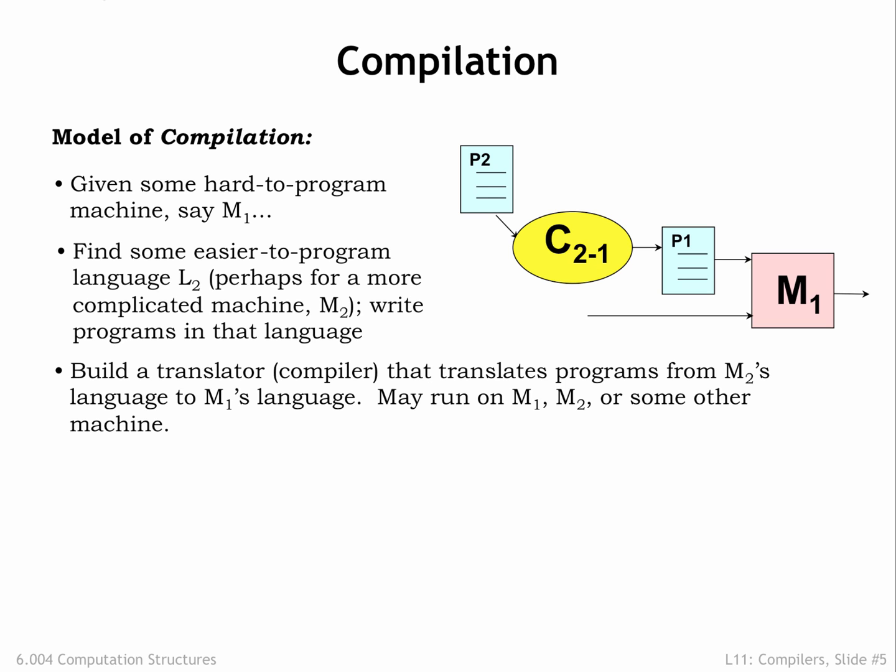The translation process is called compilation, and the program that does the translation is called a compiler. We compile the P2 program once to get the translation P1, and then we'll run P1 on M1 whenever we want to execute P2.